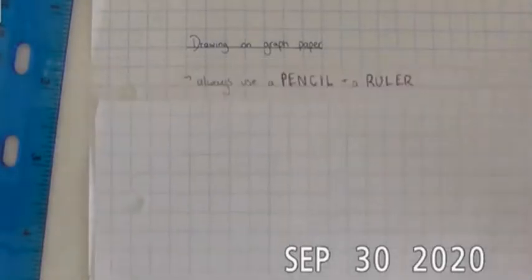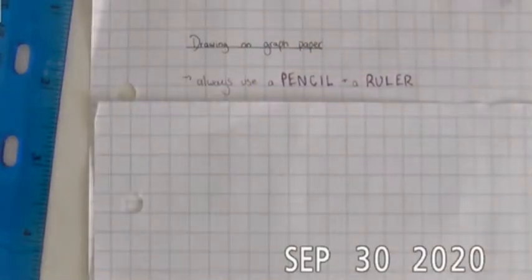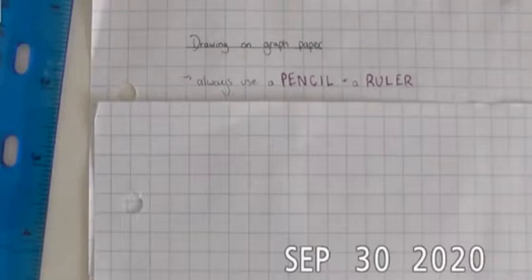For this though I wanted to talk about just some things we expect when we are drawing on graph paper. The first thing, I'm breaking my own rule here, but we would like you to always use a pencil. I am using a pen just so you all can see really clearly through the camera, but I would definitely use a pencil if I were you just so that way we can make corrections and fix mistakes as we go along.